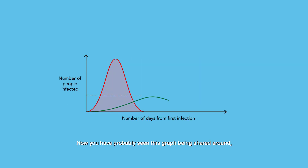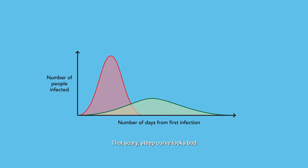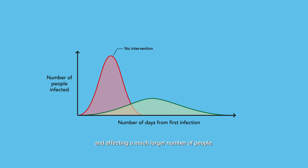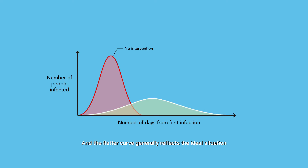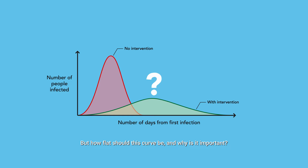You've probably seen this graph being shared around, but what does it actually mean? That scary steep curve looks bad because it means the virus is spreading quickly and affecting a much larger number of people. The flatter curve generally reflects the ideal situation where there is a slower infection rate over time. But how flat should this curve be, and why is it important?